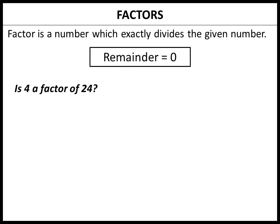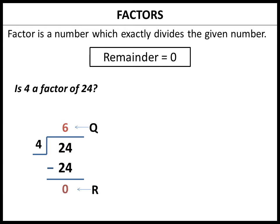For example, is 4 a factor of 24? To find out, we simply divide 24 by 4 and check if the remainder is 0 or not. If we divide 24 by 4, we get the quotient as 6 and remainder as 0. This tells us that the divisor is a factor of the dividend. So, we say that 4 is a factor of 24, which also means 24 is divisible by 4.